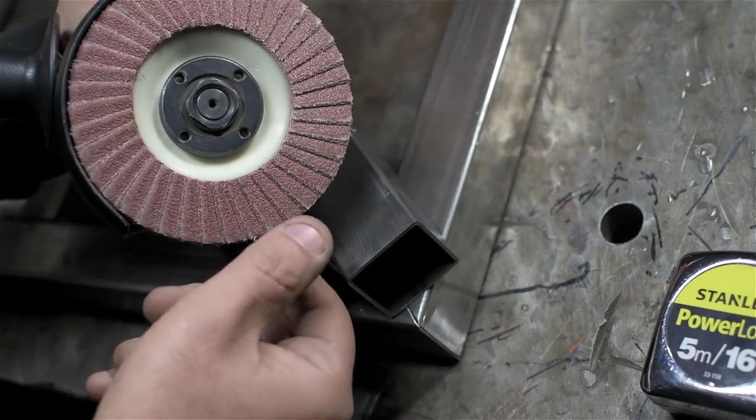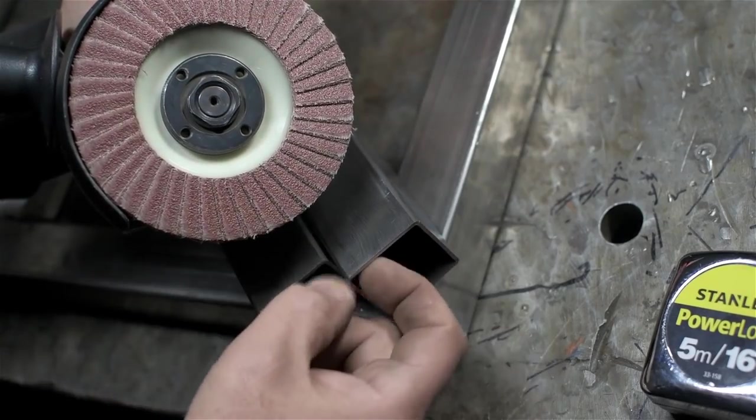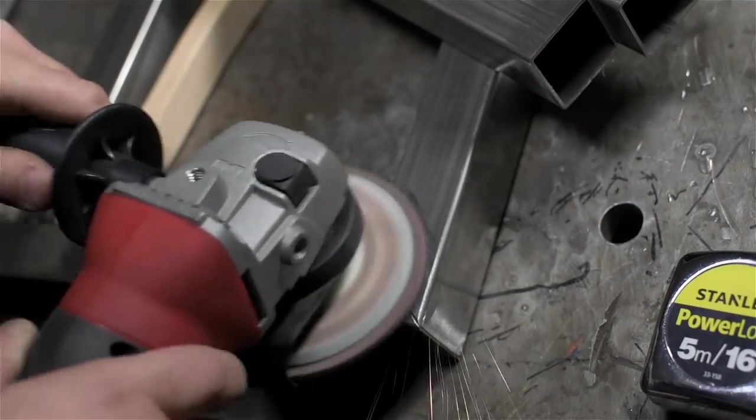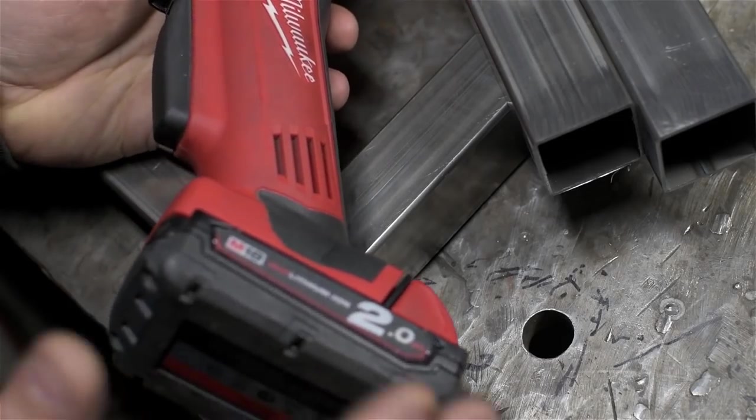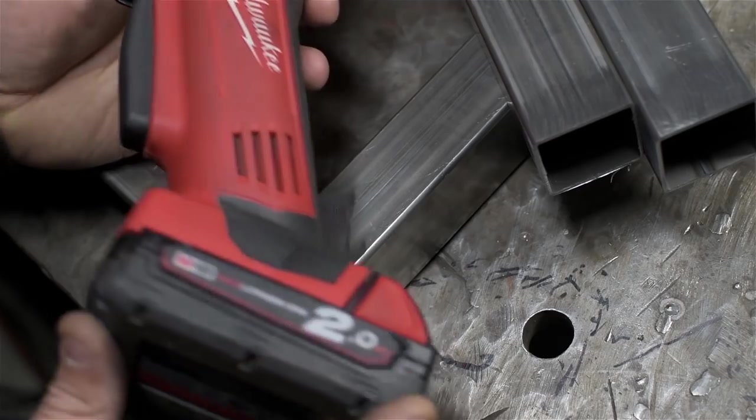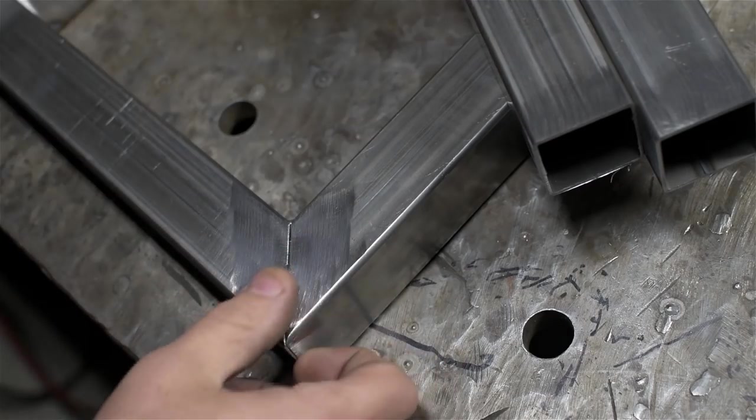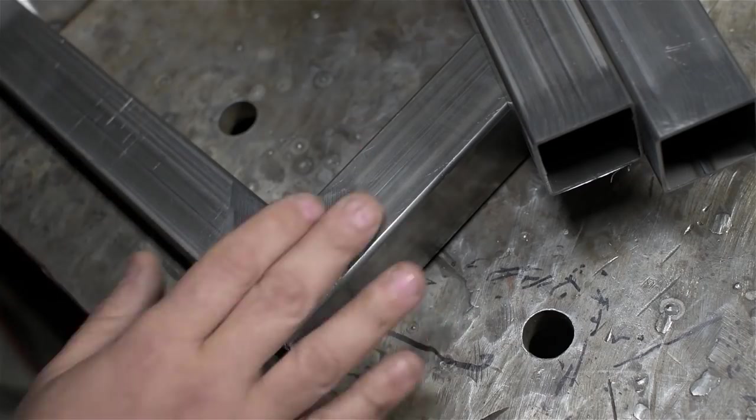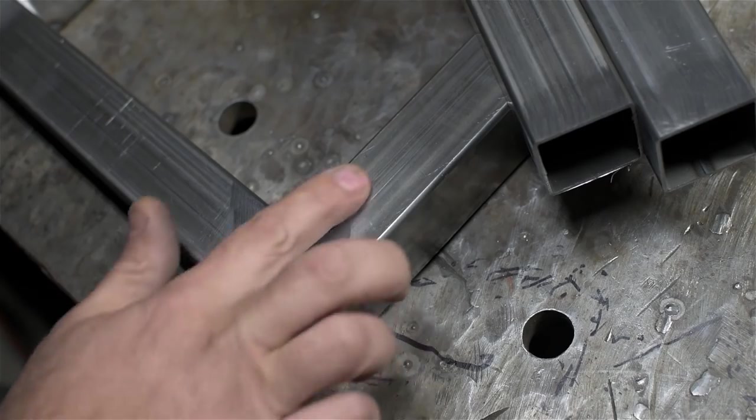I like using these coarser flap wheels. They leave a rougher surface and give the weld a little bit more to bite on. Cordless angle grinder, probably the best money I've spent in a long time. So convenient. Also, the cleanup I'm doing with it is extremely light, barely even scuff on the surface. I can't even feel.